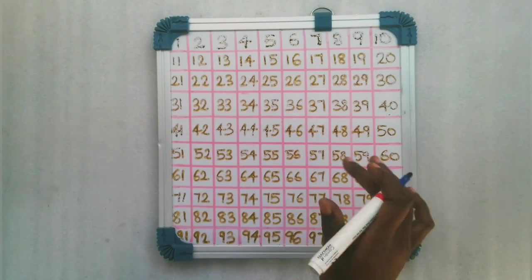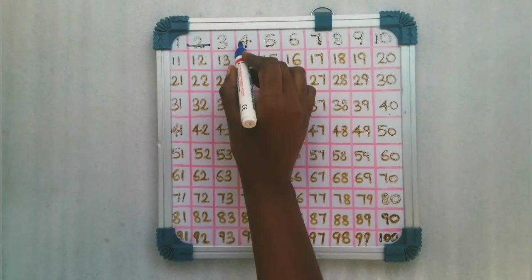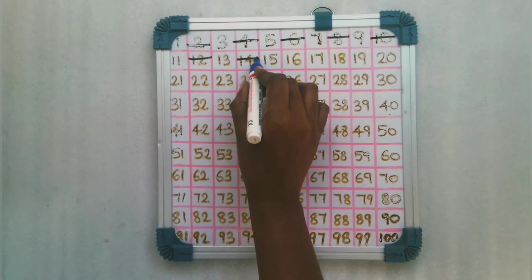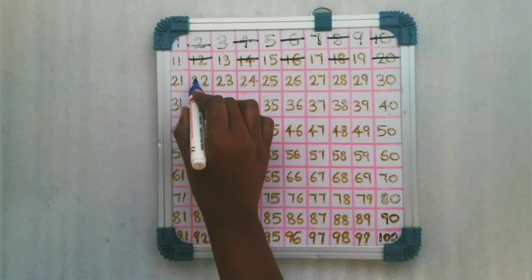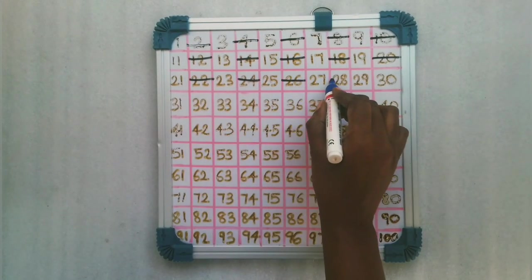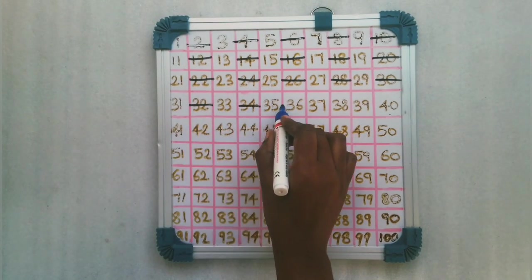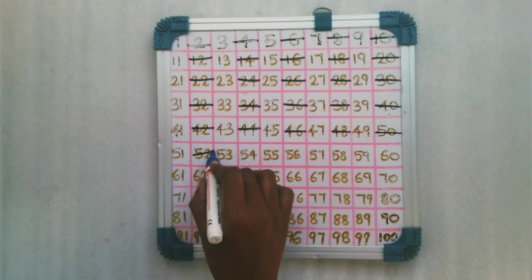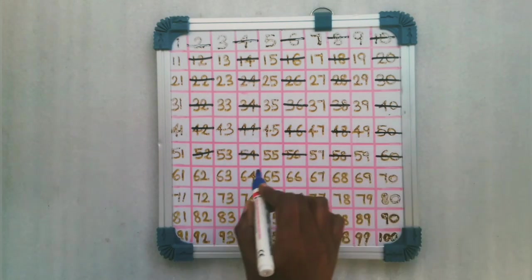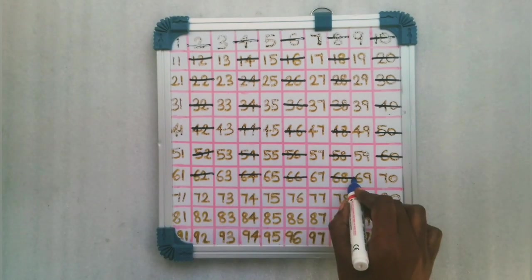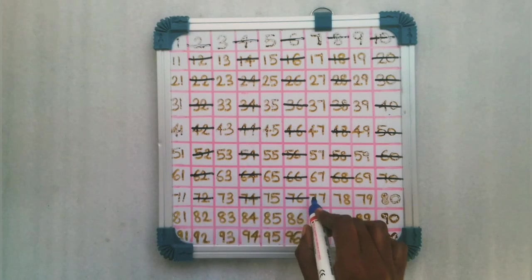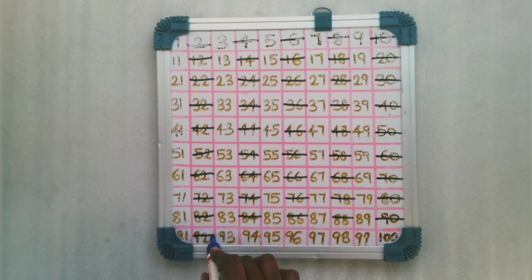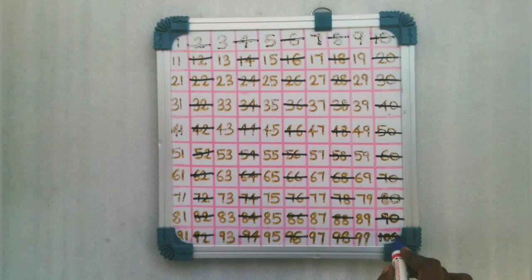The multiples of 2 up to 100 are: 4, 6, 8, 10, 12, 14, 16, 18, 20, 22, 24, 26, 28, 30, 32, 34, 36, 38, 40, 42, 44, 46, 48, 50, 52, 54, 56, 58, 60, 62, 64, 66, 68, 70, 72, 74, 76, 78, 80, 82, 84, 86, 88, 90, 92, 94, 96, 98, 100.